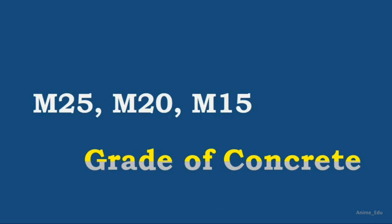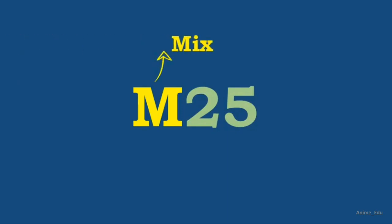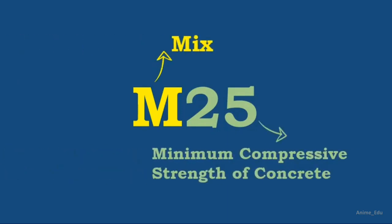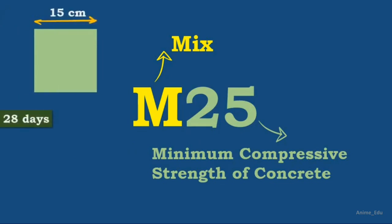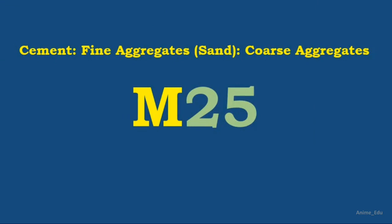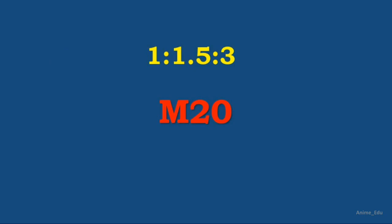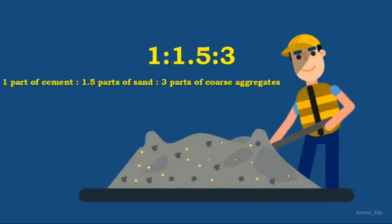These names represent the grade of concrete. The grade of concrete is represented by prefixing M followed by a number, where M stands for mix and the number denotes the minimum compressive strength of a 15 cm cube at 28 days, expressed in N per mm². For example, M20 concrete represents a mix ratio of 1:1.5:3 — that is, for every 1 part cement, 1.5 parts sand, and 3 parts coarse aggregate.